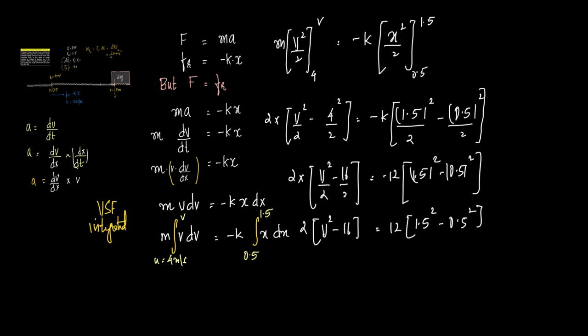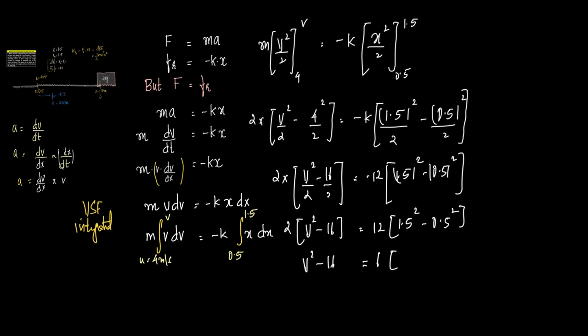So this is further, this is v square minus 16 is equal to, wait, is there any other way of solving this? Are we doing it in the difficult way? Well, okay. So 12 by 2 is 6, 6 into 1.5 square minus, a square minus b square is a plus b, which is 1.5 into 0.5, which is 2. And a minus b, 1.5 minus 0.5 is 1.